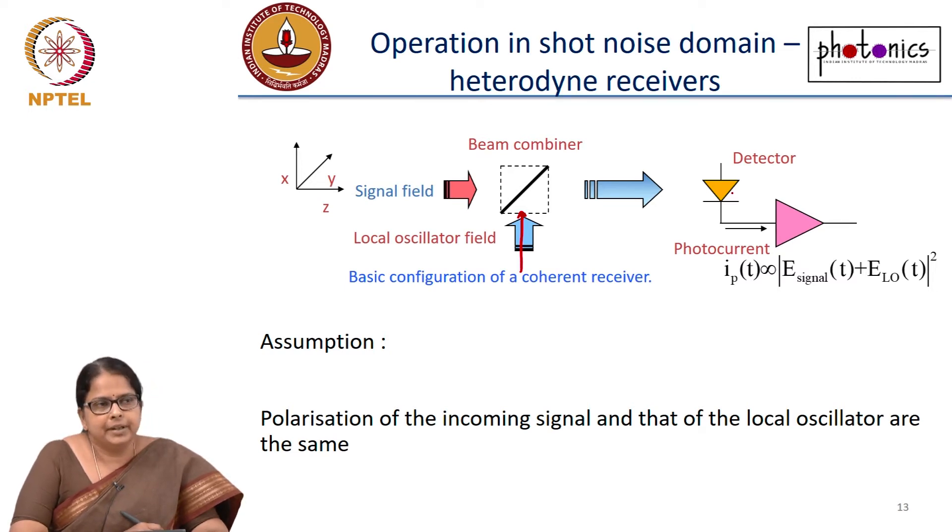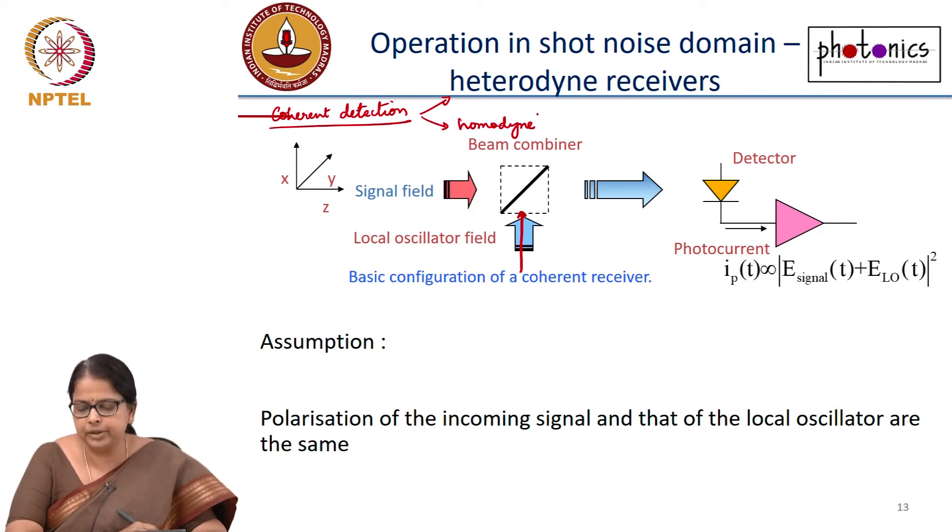This is the idea of heterodyne detection or homodyne detection or essentially coherent detection. This is the idea of coherent detection. I will tell you why it is called coherent. Coherent detection can be of two types: one is heterodyne, the other one is homodyne. I will also explain the difference in a minute.